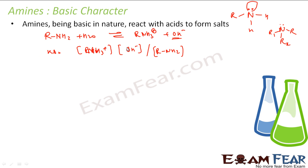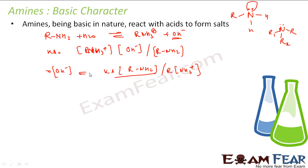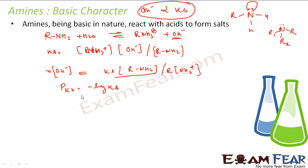Higher the value of Kb, more basic is the compound. The OH⁻ concentration is directly proportional to Kb, so higher Kb implies more basic. A term called pKb is also used, which is nothing but minus log of Kb. It is used because Kb values are on the order of 10⁻³ or 10⁻⁴, which are difficult to handle directly.